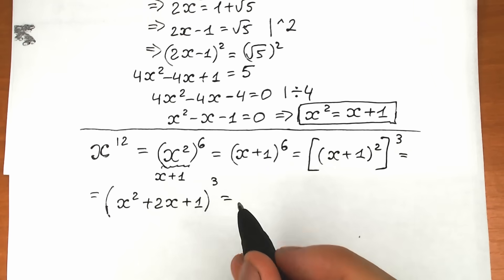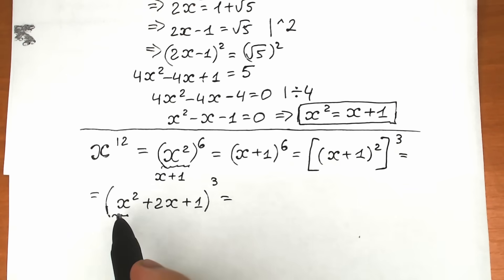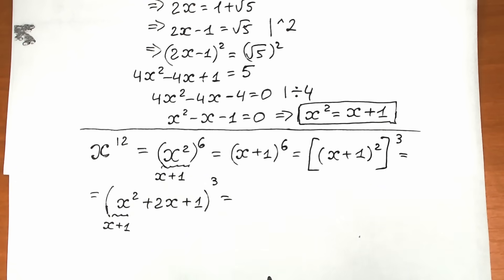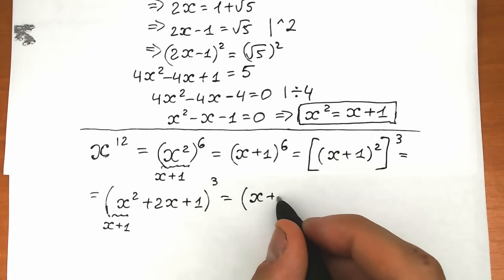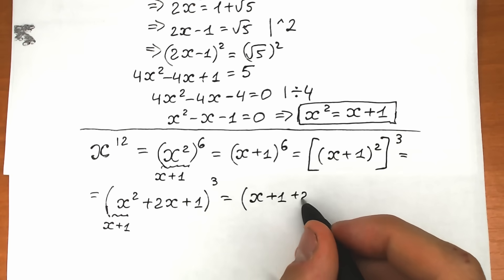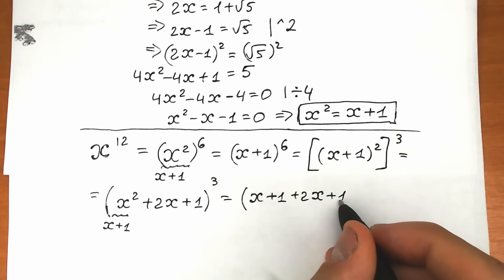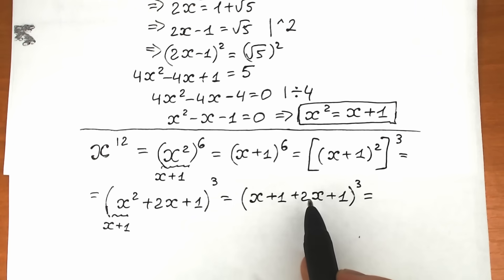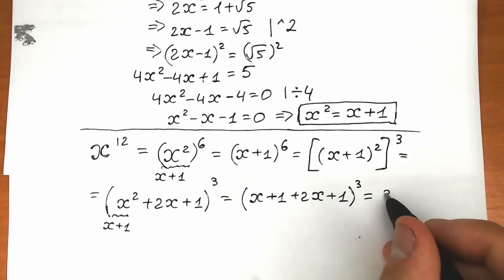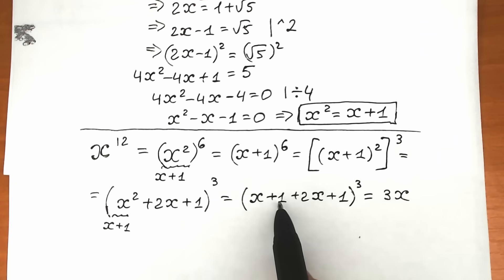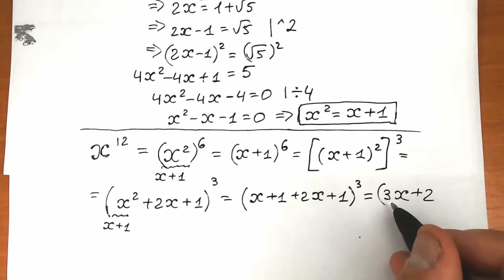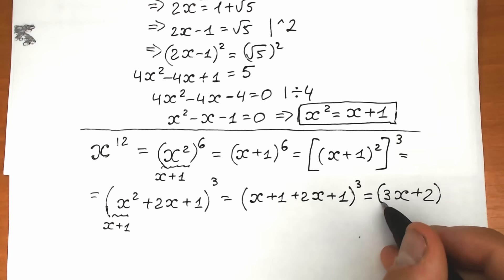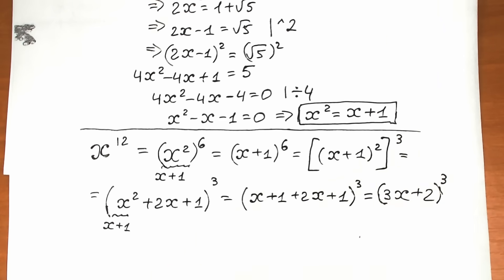Since x² = x + 1, we substitute inside the parentheses: (x + 1) + 2x + 1, raised to the third power. Adding like terms: x + 2x = 3x, and 1 + 1 = 2, giving us (3x + 2)³.